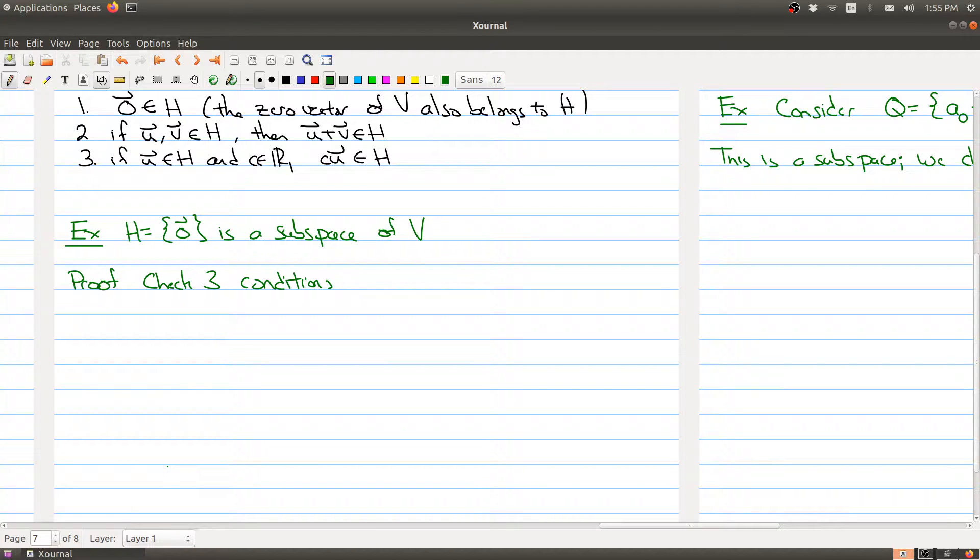So I hope you've had a chance to think about this problem that I left you, which is can you show that the zero vector is a subspace of a vector space V? And here the vector space V can be anything.